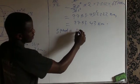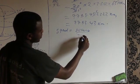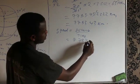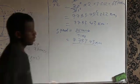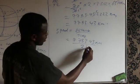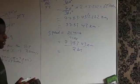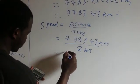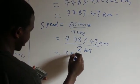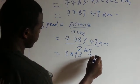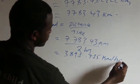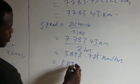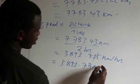To find the speed in km/h, speed equals distance over time: 7783.43 kilometers divided by 2 hours gives 3891.715, which rounds to 3891.72 kilometers per hour.